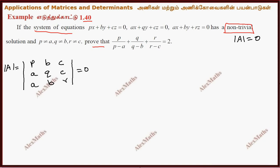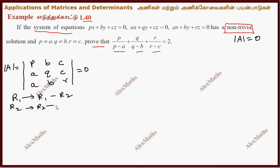Now the question is to prove that P, A, Q, B, R minus C. We create new terms. So R1 gives R1 minus R2, and R2 gives R2 minus R3.